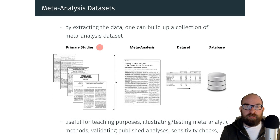So by extracting the data, one can build up an entire collection of meta-analysis datasets. We don't have to go back to the primary studies to find the data, we just go to the meta-analysis, look for a table or appendix where the data are reported, and this we can then include in our database.